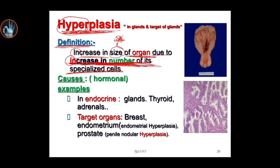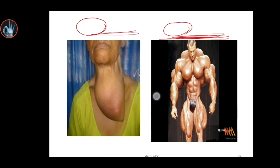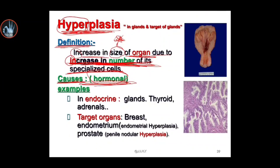Hyperplasia is increasing the number of cells. The cause of hyperplasia is hormonal — meaning the cause of the increased cell number is a hormonal or glandular change. One of its major features is that it occurs in the glands.